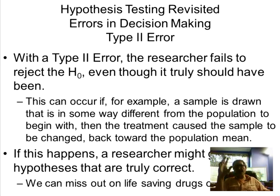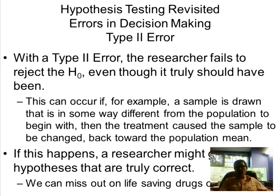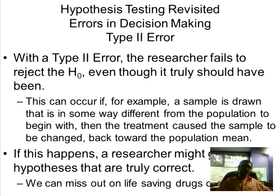In a Type 2 error, let's say Cheerios does lower cholesterol, but we get to the end of our study, run our test, and conclude the average cholesterol of the Cheerios group is no different from those without Cheerios — fail to reject the null, Cheerios does nothing. This could happen if, for example, people were motivated by knowing it's a cholesterol study and changed other behaviors.